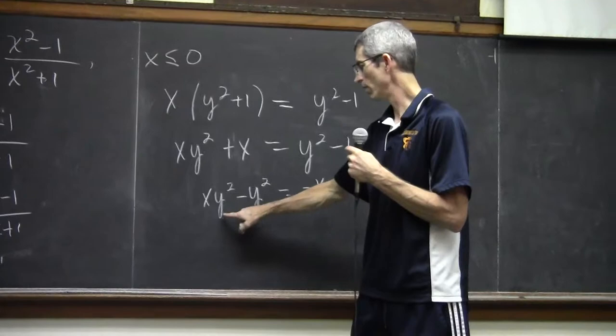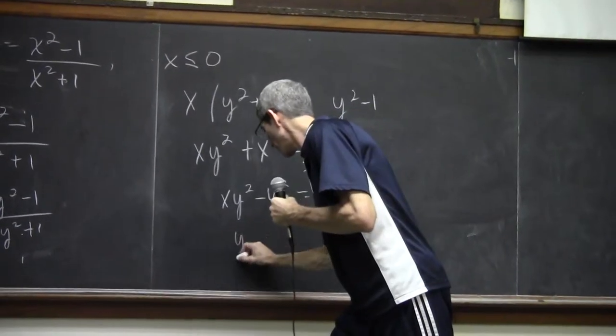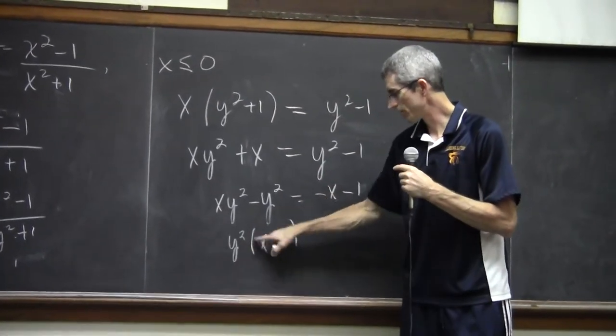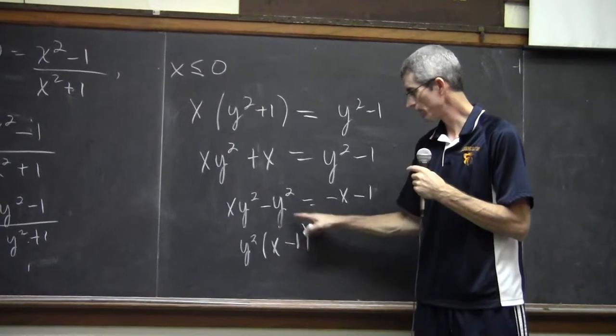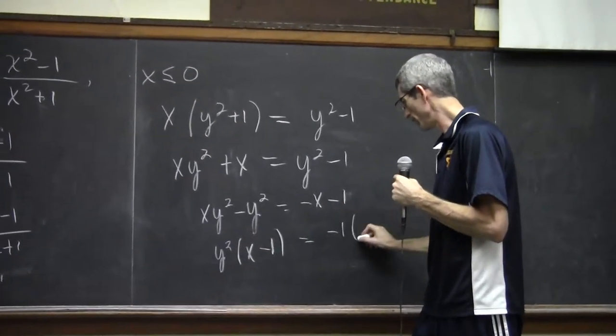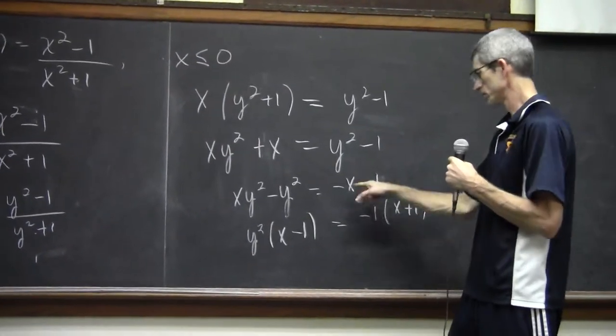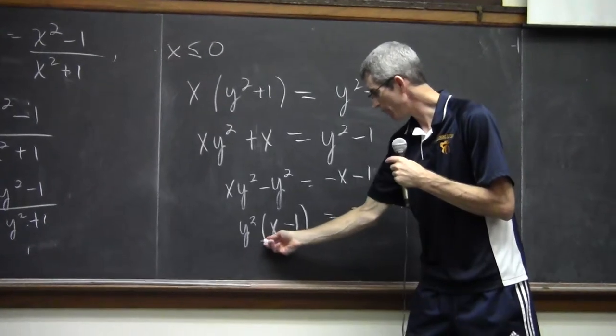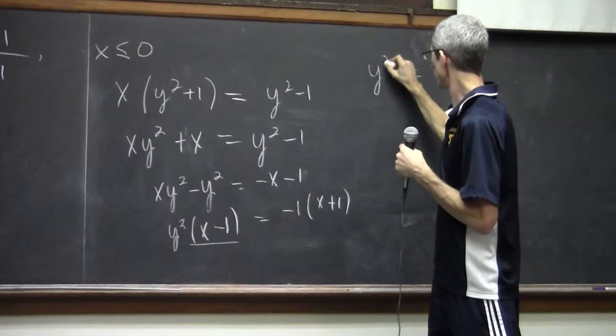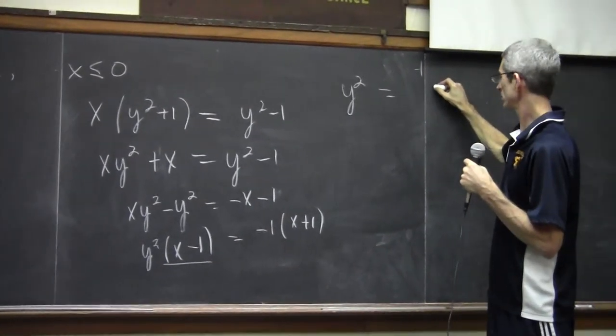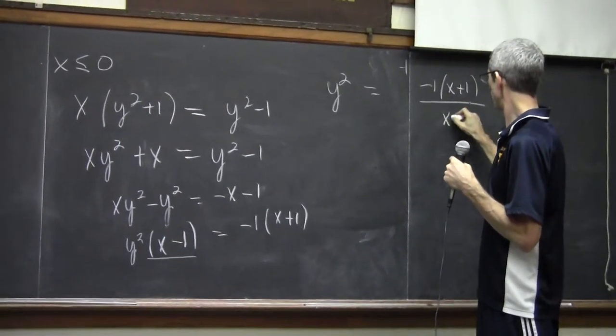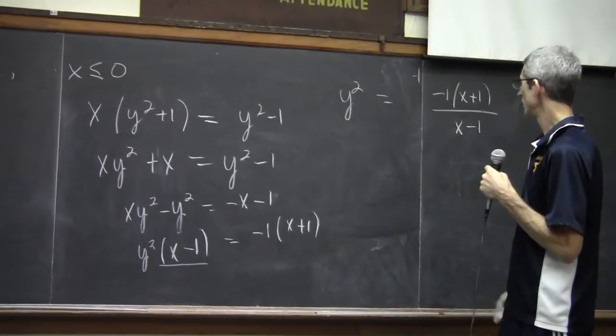Now I can factor out a y squared. See that? Because y squared times x is xy squared. Y squared times negative 1 is negative y squared. And over here I'm gonna factor out a negative 1, just because I don't like negative x's. Now I'm gonna divide both sides by x minus 1. So I'm gonna have y squared equals negative 1 times x plus 1 over x minus 1. So far so good.